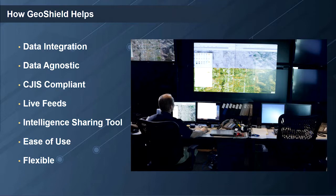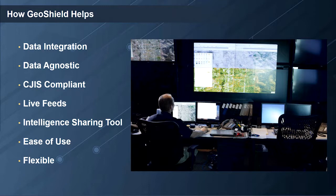GeoShield is also CJIS compliant. CJIS — the Criminal Justice Information Services security policy — is the federal mandate for how law enforcement agencies can collect, store, share, and purge information such as Social Security numbers, dates of birth, and criminal histories. These standards are very high and subject to regular FBI screening for compliance. GeoShield can also integrate live feeds: surveillance cameras, GPS-enabled assets like police cars, and other sensor data into the agency's GeoShield environment.